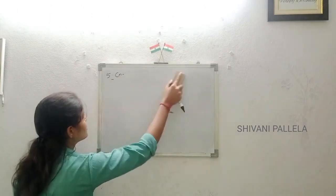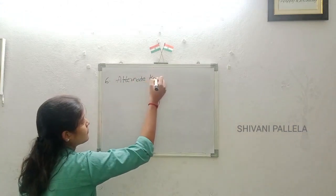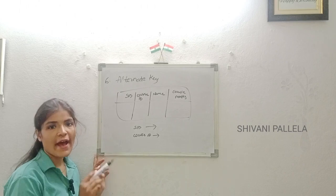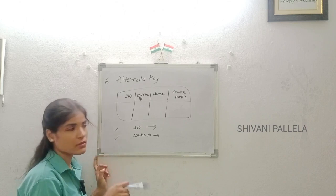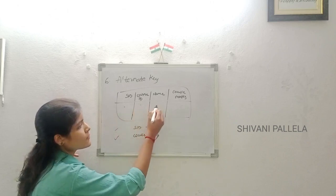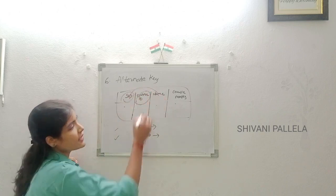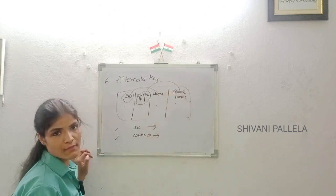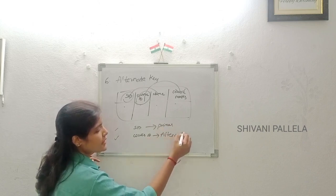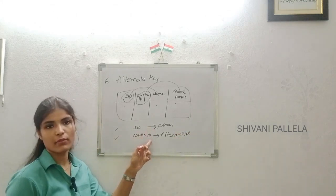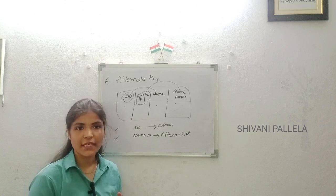The last type is the alternate key. An alternate key is an attribute that can also identify a particular row, alongside the primary key. For example, in a table with student ID, course ID, student name, and course marks — student ID is the primary key, and course ID is considered the alternate key, since it can also be used to identify a particular row.